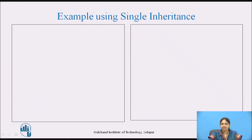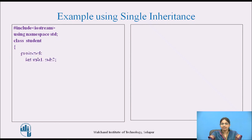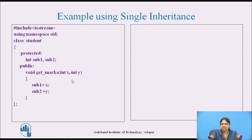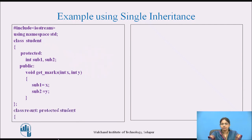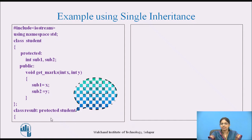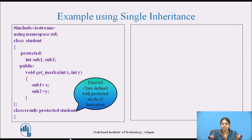Let us take one more example using single inheritance. We have a class 'student'. Under protected visibility label, there are two data members: subject1 and subject2. Under public visibility label, there is a member function 'getmarks' which assigns the values of x and y to subject1 and subject2. This is the base class. There is another class 'result' derived from class student under protected mode of derivation.